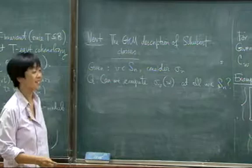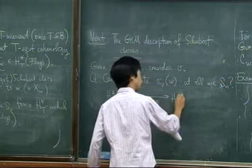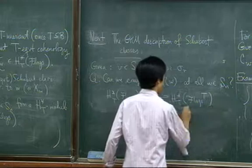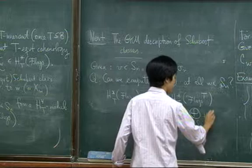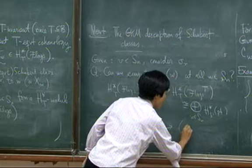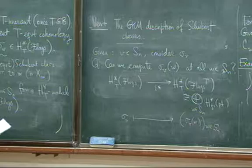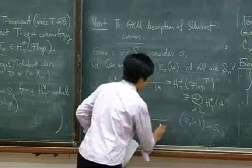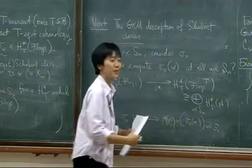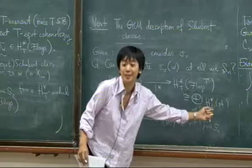Please remember, what I mean by that notation is the following. So I have HT of flags, Sigma, and please remember, I have this restriction map. And please remember, this is nothing else than the sum over the fixed points of the cohomology of a point. And so, when I have a sigma of V, this should go to a list of polynomials, one for every fixed point. This is why I changed notation slightly, I apologize.